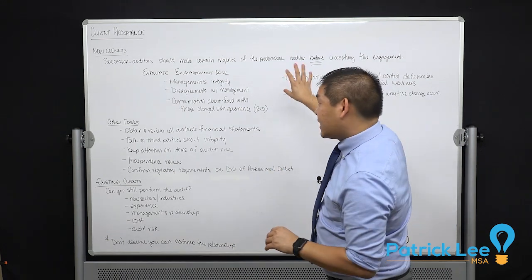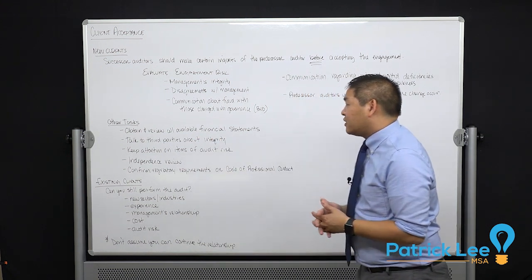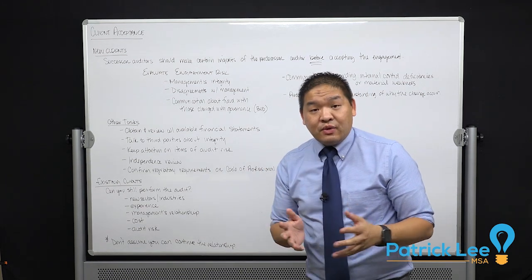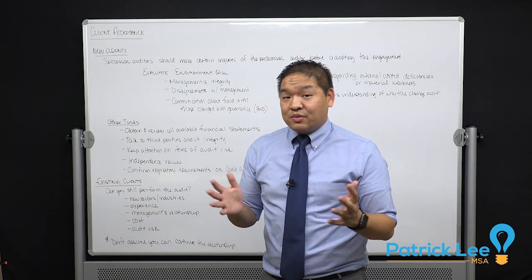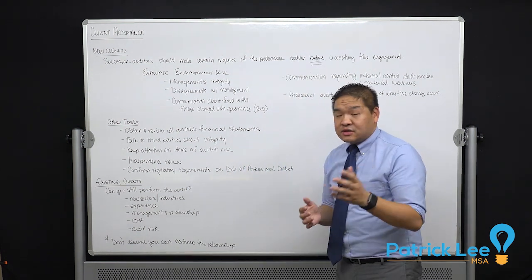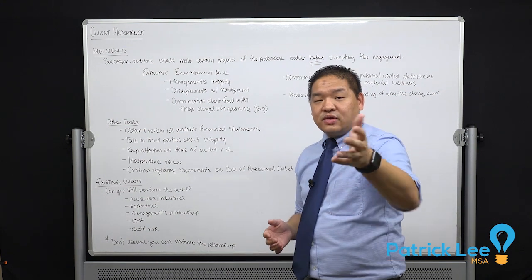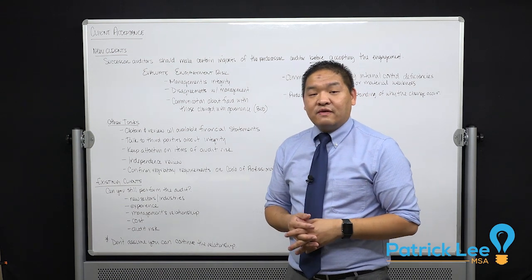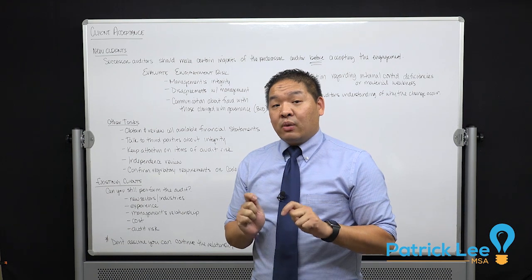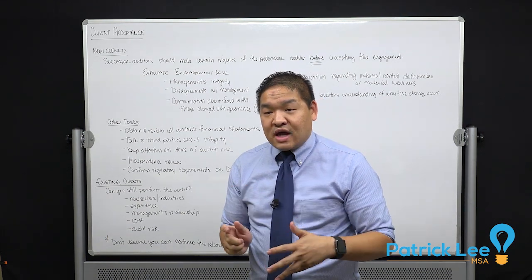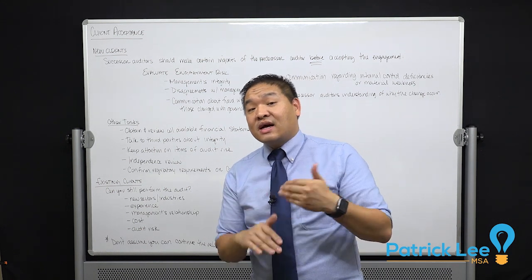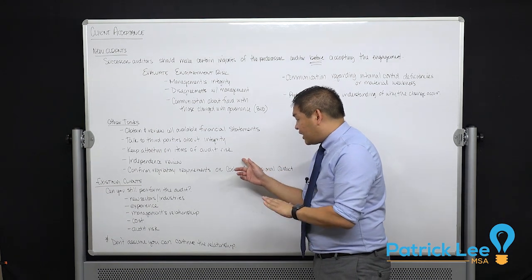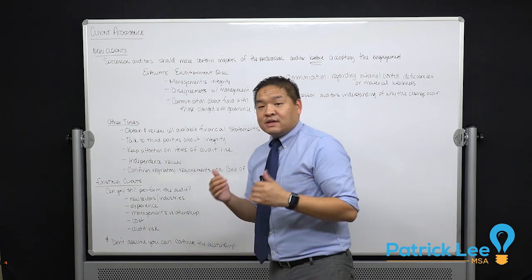Other tasks we might do at the same time as talking with the predecessor auditor: obtain and review all available financial statements to understand what's going on. Talk to third parties about integrity — we might go to their bank and talk to their bankers, or talk to vendors. We also need to keep attention on items of audit risk. Audit risk is the risk that we will say the financial statements are clean when in actuality they are not — in other words, giving the wrong opinion.